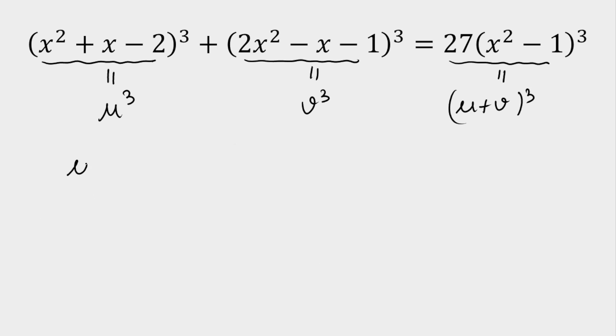As I said, either u = 0, or v = 0, or u + v = 0. Now I'm going to equate u = 0, which gives x² + x - 2 = 0. Then v = 0 gives 2x² - x - 1 = 0. And u + v = 0 gives x² - 1 = 0.